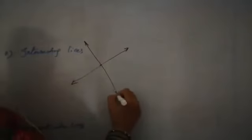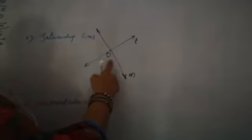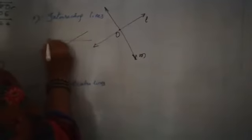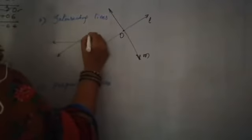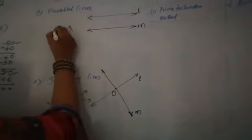What are intersecting lines children? The lines which intersect each other at a common point are called intersecting lines. The two lines which intersect each other — this way also and this way also, you can show it. So these two lines are called intersecting lines. And parallel lines — this way also, this way also you can show.